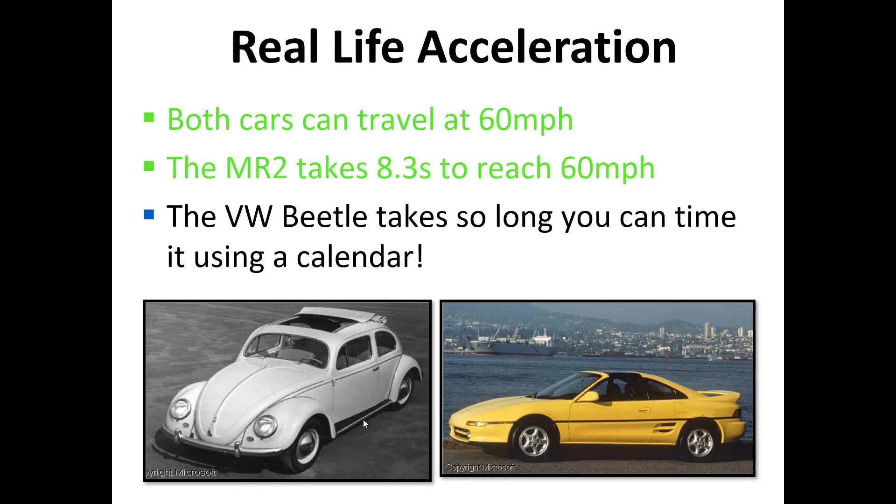Here's just a real-life example of acceleration. Both of these cars can travel 60 miles an hour. However, the sports car can get to 60 miles per hour a lot faster than the beetle, and so if we're comparing accelerations of two objects, we might say one accelerates faster than the other.